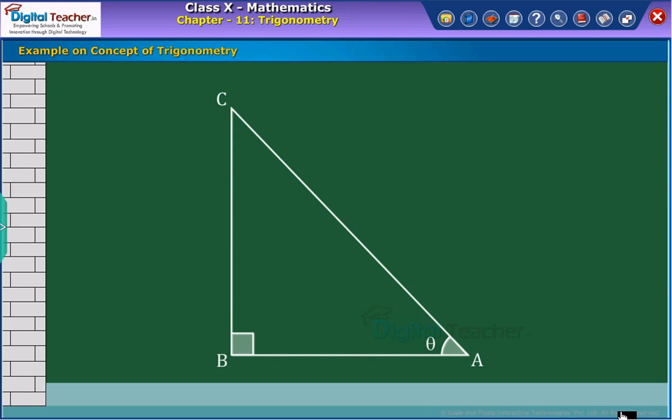At present, the right angle triangle ABC is given ordinary names for all sides and angles. Now, let's name the sides of the triangle once more, because trigonometric ratios of angles are based on sides only.